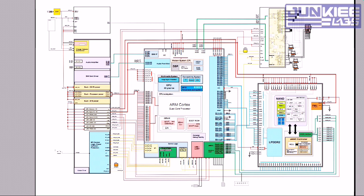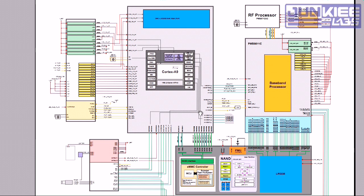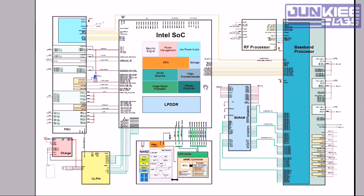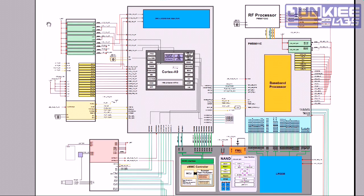Untuk saat ini, kita belajar dulu tentang Exynos, Intel, dan MTK. Untuk Qualcomm, di video tutorial berikutnya insya Allah kita akan ketemu lagi. Diagram-diagram ini — sekalipun saya hanya membuatkan satu buah diagram untuk perwakilan MTK, satu untuk Intel, dan satu untuk Exynos — konstruksi dari diagram-diagram ini dapat kita gunakan untuk semua varian platform tersebut. Sekalipun nanti tipenya berbeda, selama menggunakan platform Exynos, kurang lebih konstruksinya hampir sama.